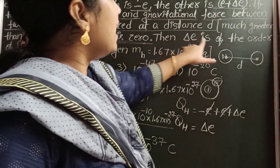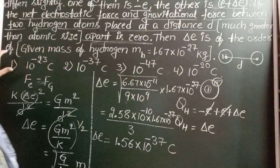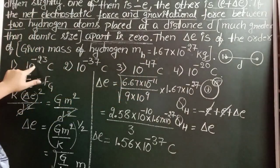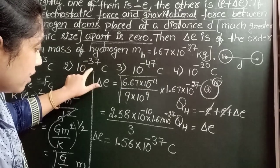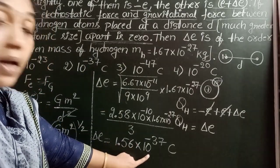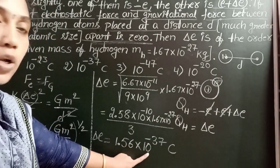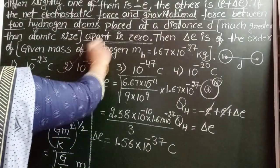Then delta E is of the order of, check the given options: 10 power minus 23, 10 power minus 37. So it is in the order of 10 power minus 37 Coulombs. Second option is correct.